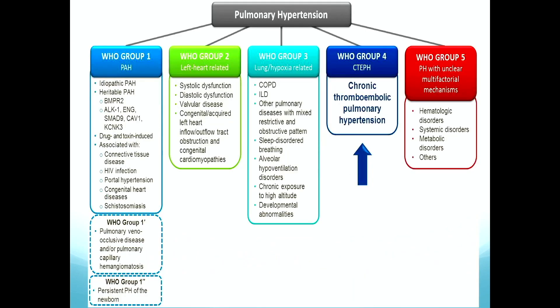Pulmonary hypertension — this is the WHO classification, which has been updated many times over the last decade. CTEPH is WHO group four, which encompasses chronic thromboembolic pulmonary hypertension, and we're going to be focusing on that for the rest of the lecture.